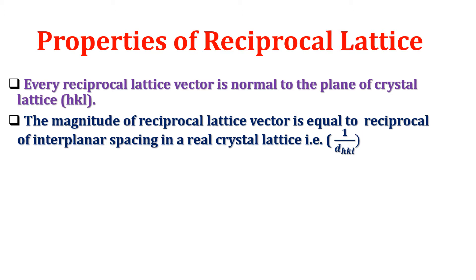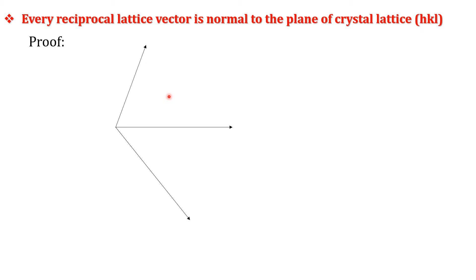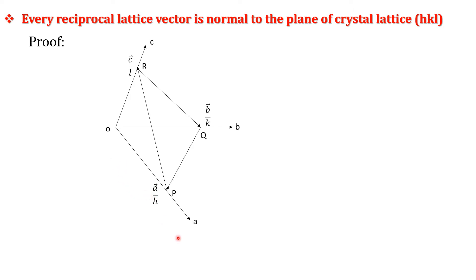Here we explain the proof that every reciprocal lattice vector d* hkl is normal to the plane of the crystal lattice — that is, d* hkl dotted with any vector lying in the plane must vanish. We choose a direct lattice plane along the three crystallographic axes a, b, and c. That plane p q r intersects at distances a/h along the a-axis, b/k along the b-axis, and c/l along the c-axis.